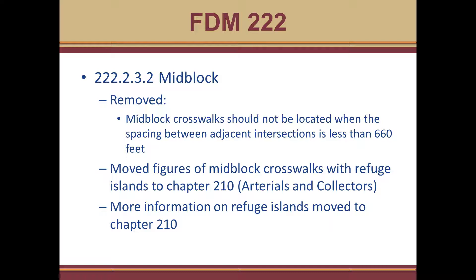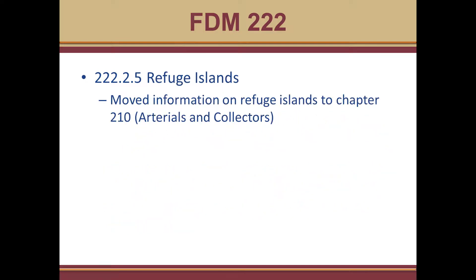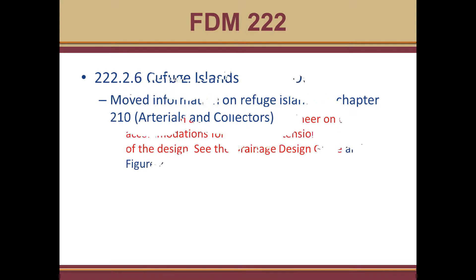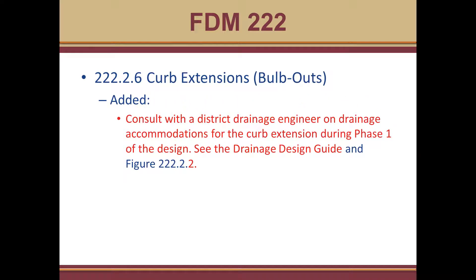More information on refuge islands was also moved to chapter 210. Previously, the refuge island information was in chapter 212, Intersections. So the refuge island information has been moved to the arterials and collectors chapter. We had some changes in the bulb-out section — we added clarification to consult with a district drainage engineer on drainage accommodations for the curb extension during phase one of the design, and to see the drainage design guide's figure for more information.